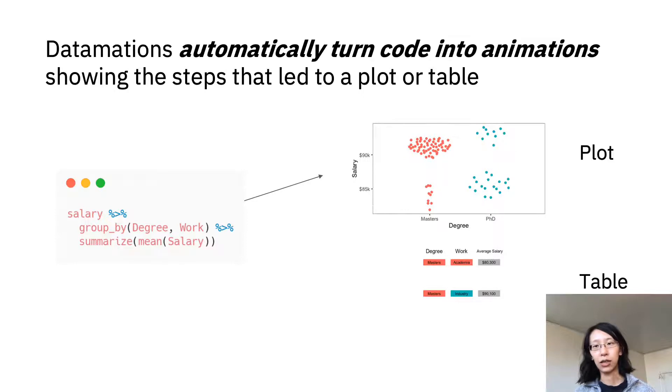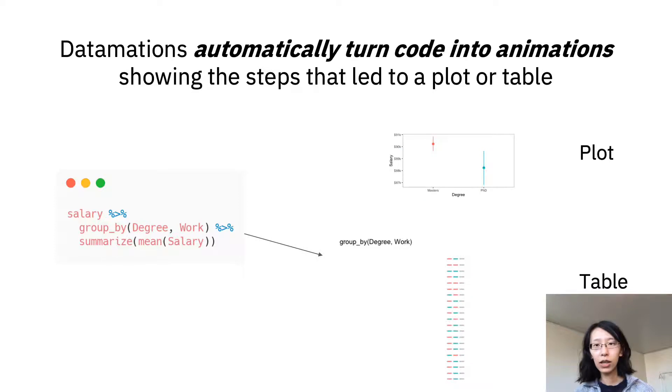The output is the animation that explains how the final plot came to be. And then this is the table version of Datamations, where data show up as table entries and then get grouped and summarized.